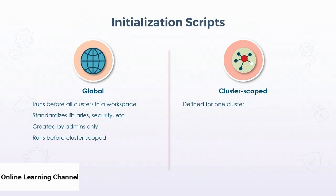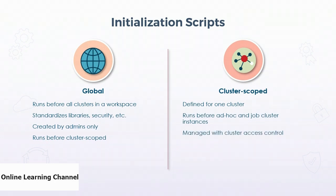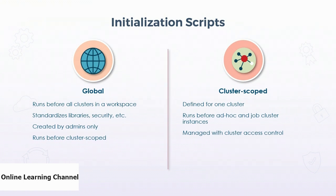Cluster-scoped initialization scripts are only relevant to one cluster. These apply to both all-purpose clusters used to run ad-hoc processes and job clusters for job instances. Because the scope of these is the cluster, access control can be set up to allow only certain people to modify the script. You need to be cautious when combining global and cluster-scoped initialization scripts since they can have conflicts. For example, a new cluster might have the global script run to apply certain libraries, and then its cluster-scoped script might apply other libraries that conflict with the global ones, resulting in a broken cluster.